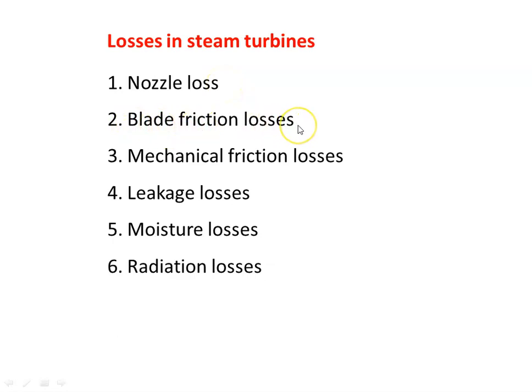The second type is blade friction losses, which occur in the rotor blade or stator blade. The blade is a metal surface — whether it is a moving blade or a fixed blade — made of nickel chromium steel, with highly polished surfaces. Even so, there are frictional losses because the fluid is making contact with and sliding over the blade surfaces. The effect of these frictional losses in the fixed or moving blade is a loss of energy and an overall loss of efficiency of the machine.